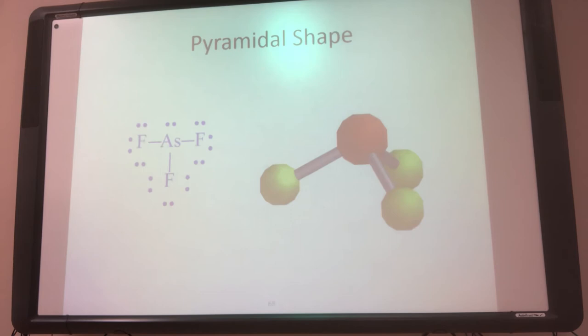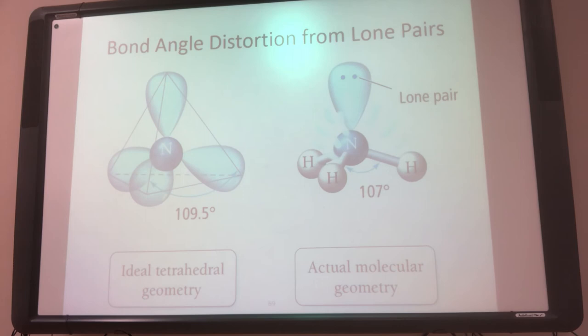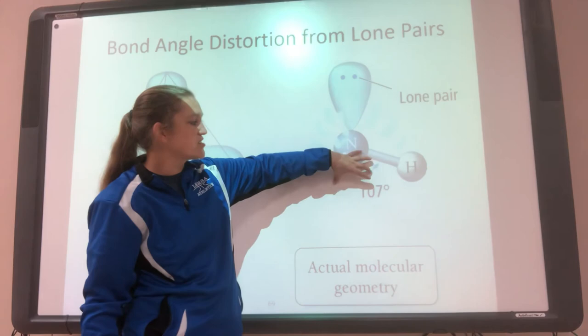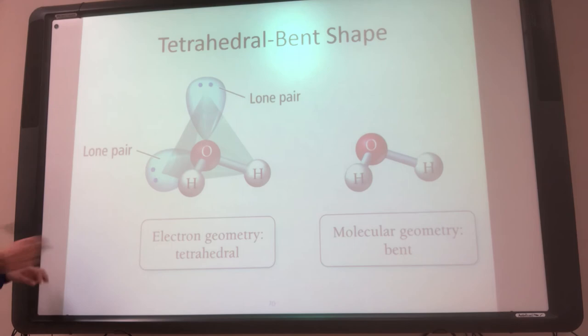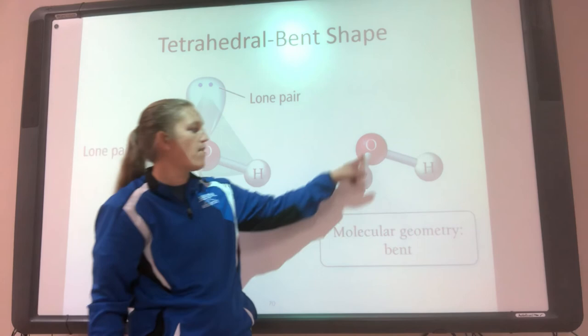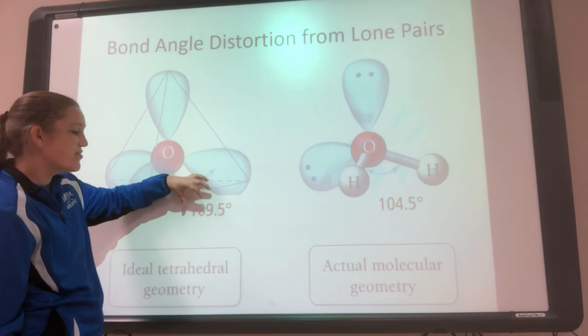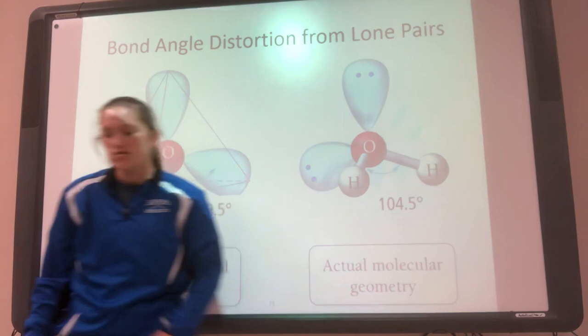So here's what I was saying. Tetrahedral is 109.5°, but when we make one a lone pair, the bonds smush in — so for the pyramidal shape, if I have one lone pair, these are going to smush in to be less than that. If I make it another lone pair, these two are going to smush in even more, giving us the bent shape. Two lone pairs push in from 109.5°, and the angle becomes even smaller than with just one lone pair.